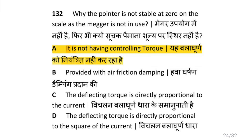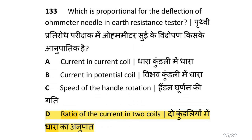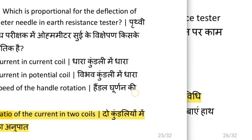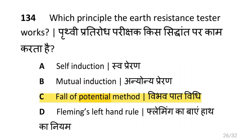Why is the pointer not stable at zero on the scale when MAGR is not in use? That is because it does not have controlling torque. Which is proportional to the deflection of the ohmmeter needle in earth resistance tester? That is the ratio of current in two coils. Which principle does the earth resistance tester work on? That is the fall of potential method.